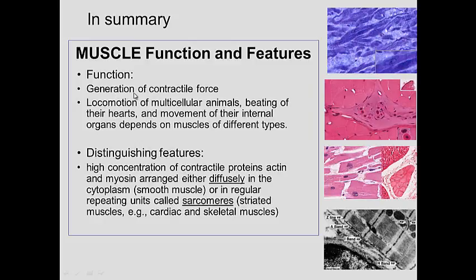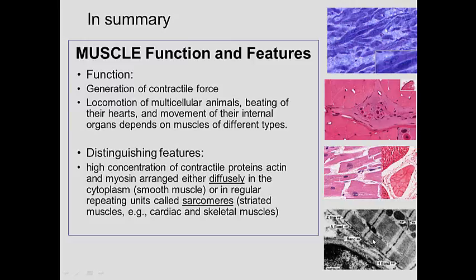In summary, muscle functions to generate contractile force — to move limbs, organs, and things within organs. It has a high concentration of actin and myosin. Most cells can contract, but muscle cells especially so. In striated muscle, actin and myosin are arranged in sarcomeres; in smooth muscle, they are diffusely arranged. We have seen smooth muscle cells, skeletal muscle cells, cardiac muscle cells, Purkinje fibers, and the transverse tubule on the Z-line indicating cardiac muscle.